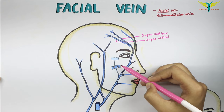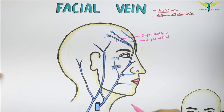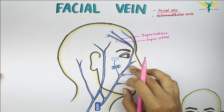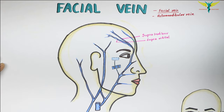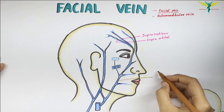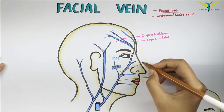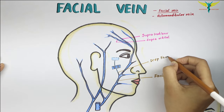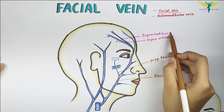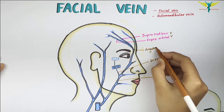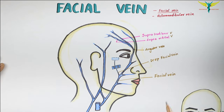After formation, the facial vein runs straight downwards and backwards behind the facial artery to reach the anterior inferior angle of the masseter muscle, where it pierces the deep fascia. In the diagram, the angular vein is formed at the commencement where the supratrochlear and supraorbital veins unite, and the deep facial vein is also visible here.